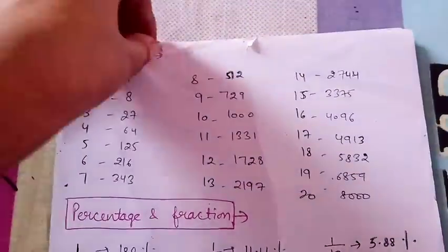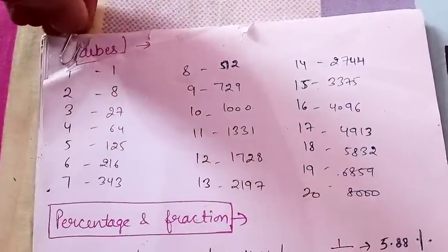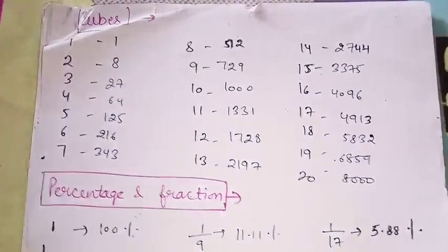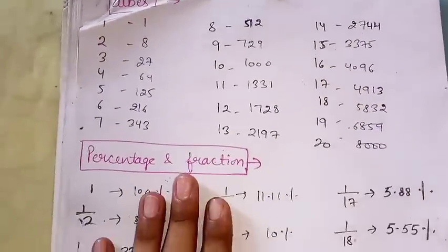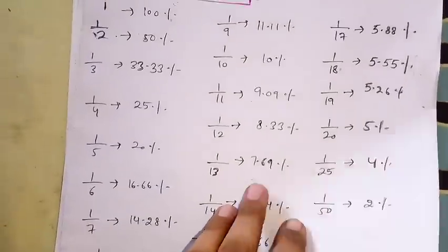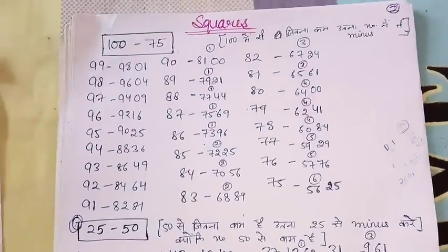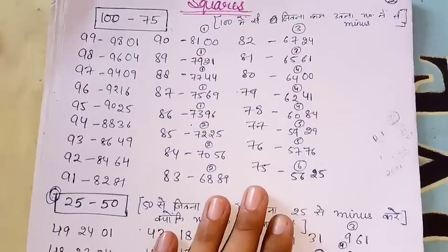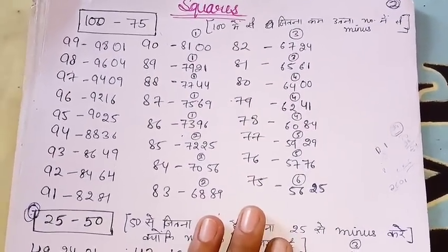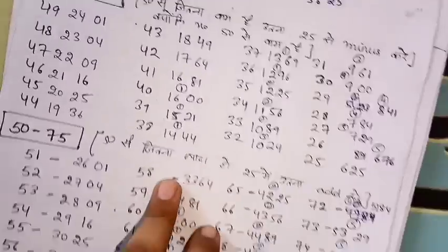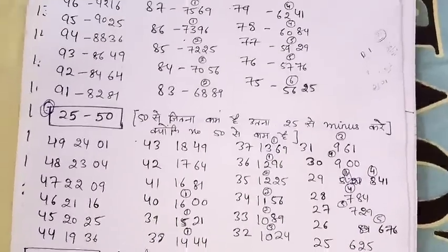These are my quant notes - they are not in a very good condition as you can see. I will show you. First I have written the cubes, then percentage and fractions, then some tables and squares. These are the percentage and fractions, and then these are the formulas by which you can find the squares. This is the formula for finding 100 to 75 square, and after 25 to 50, and then 50 to 75.